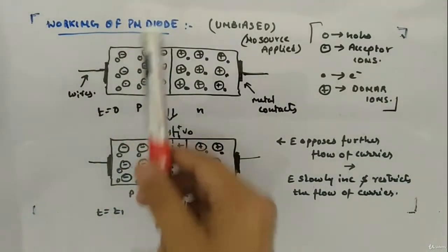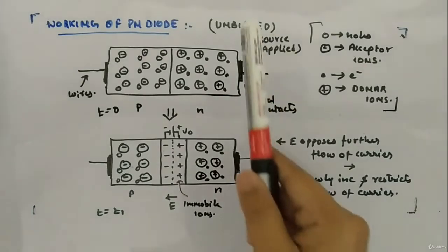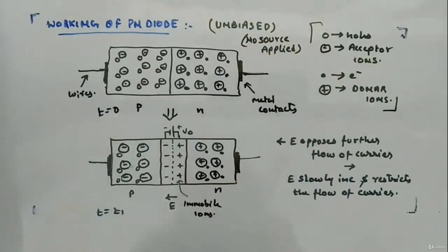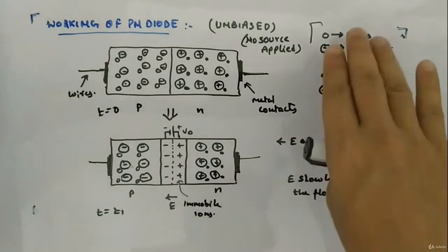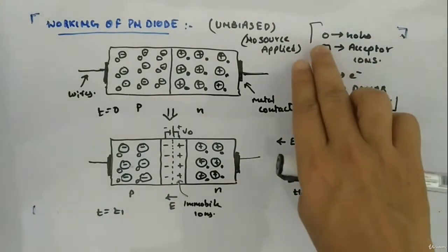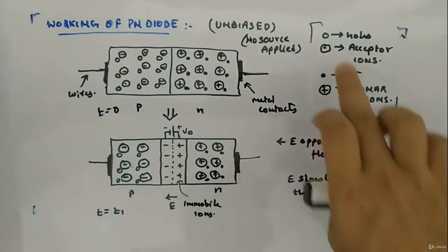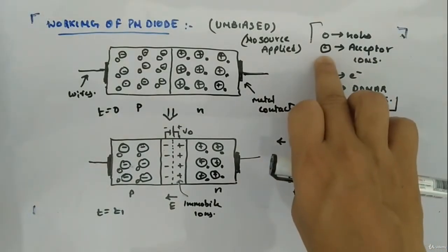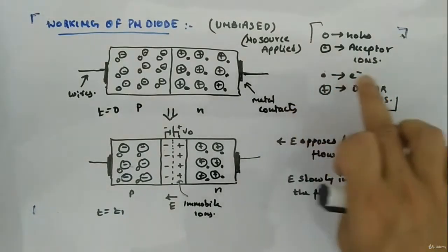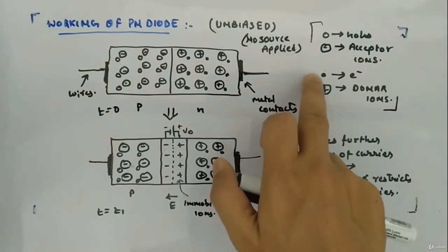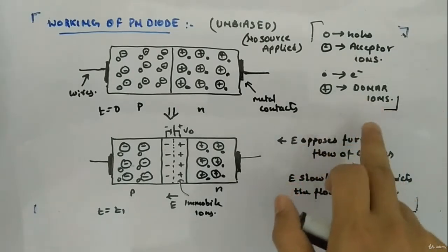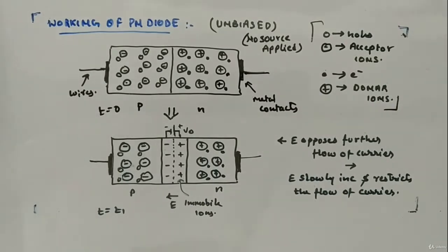Let's look at the working of the PN junction diode. First, we will look at the case of unbiased — meaning we will not apply any voltage source to the terminals of the diode. These are the representations: the unfilled circle represents holes, the circle with a negative sign inside is the acceptor ion, the filled circle is the electron, and the circle with a positive sign is the donor ion.